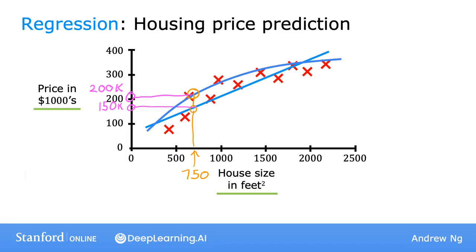Now, it doesn't seem appropriate to just pick the one that gives your friend the best price. But you'll see how to get an algorithm to systematically choose the most appropriate line, curve, or other function to fit to this data. What you see in this slide is an example of supervised learning, because we gave the algorithm a dataset in which the right answer — that is, the label or the correct price y — is given for every house on the plot. And the task of the learning algorithm is to produce more of these right answers, specifically predicting the likely price for other houses like your friend's house. That's why this is supervised learning.